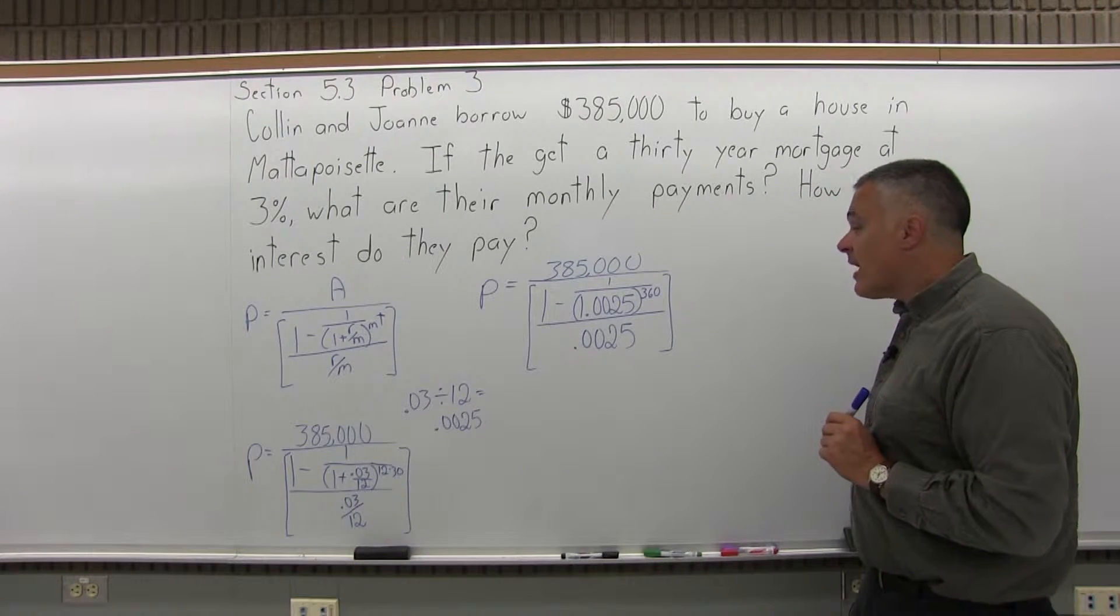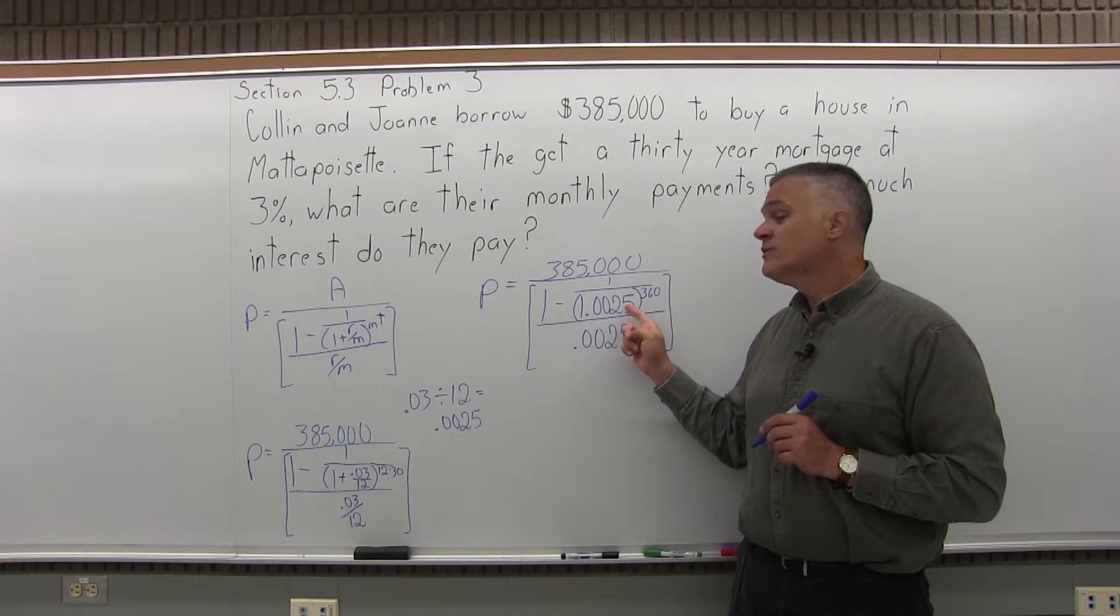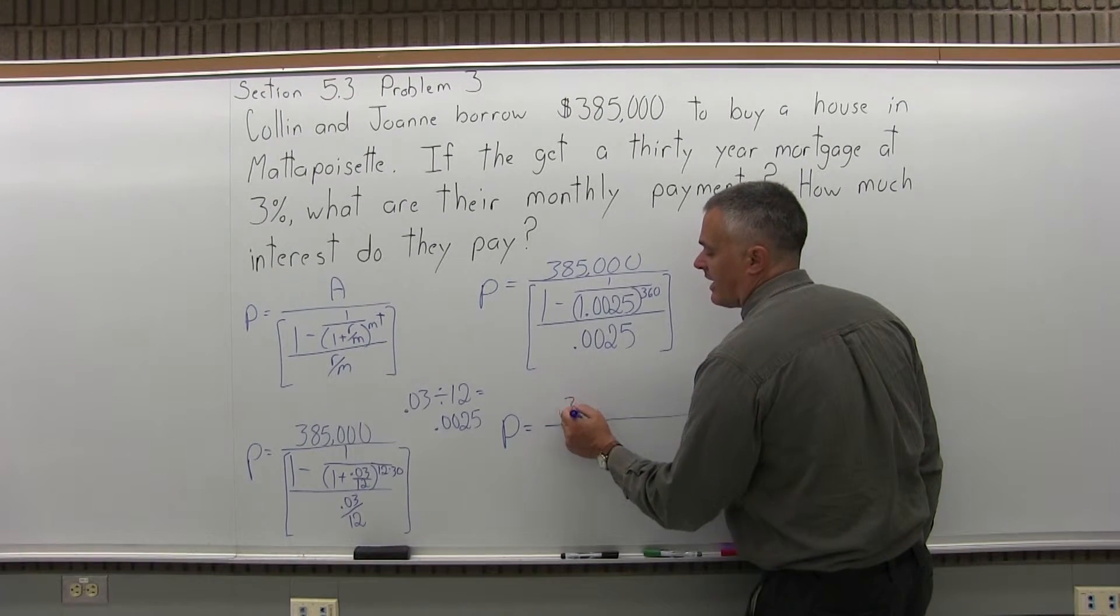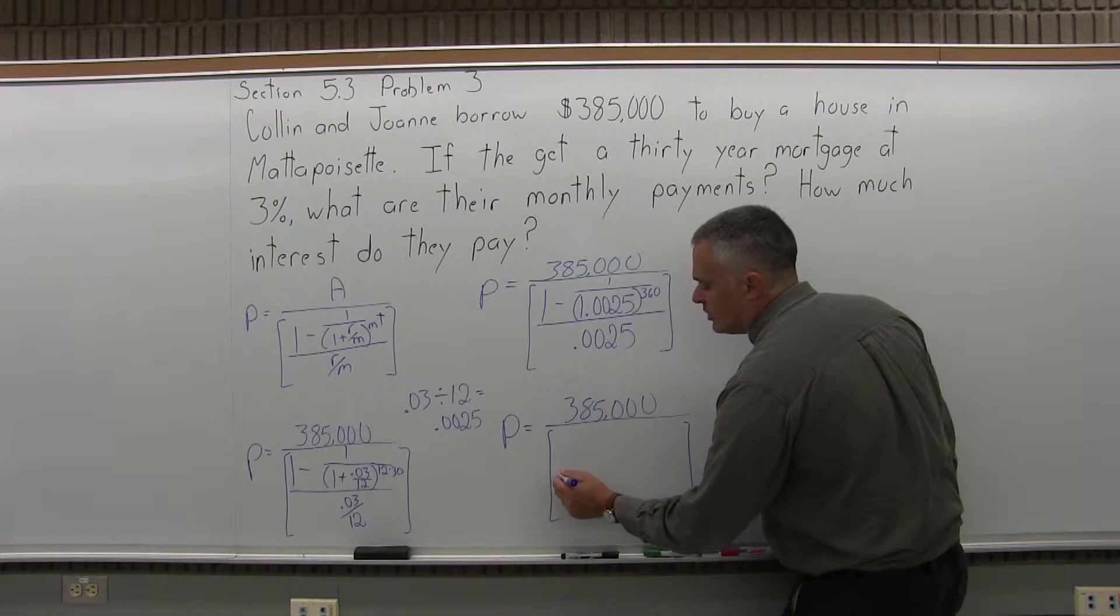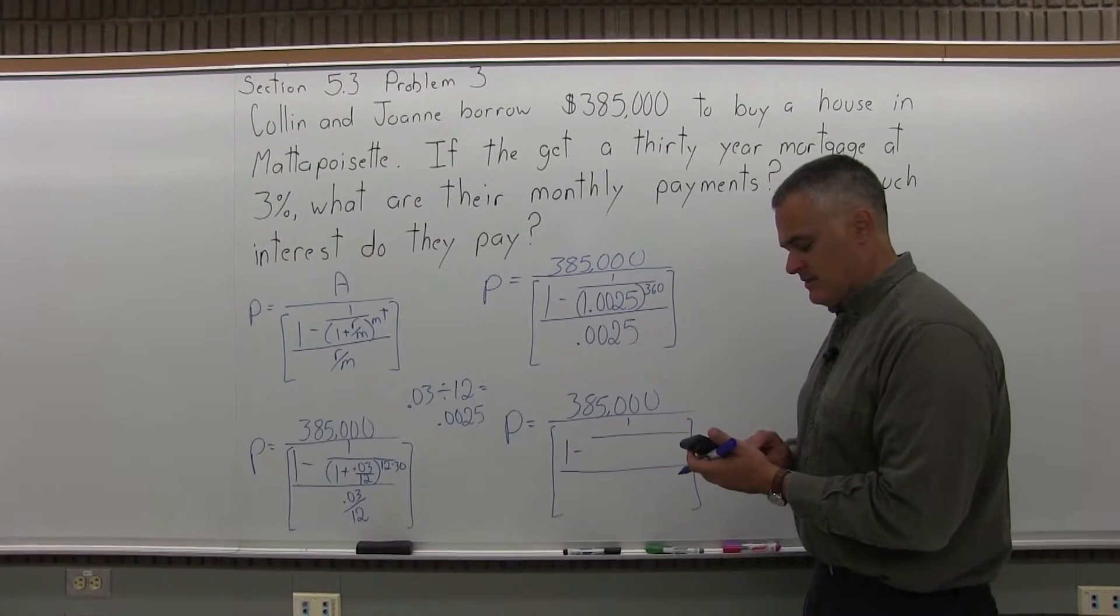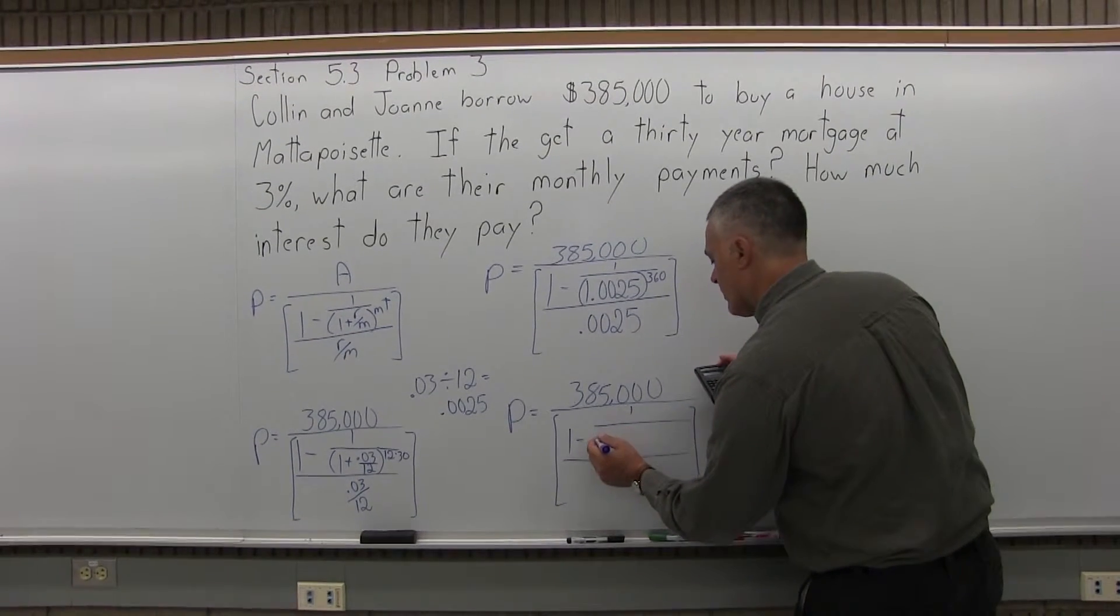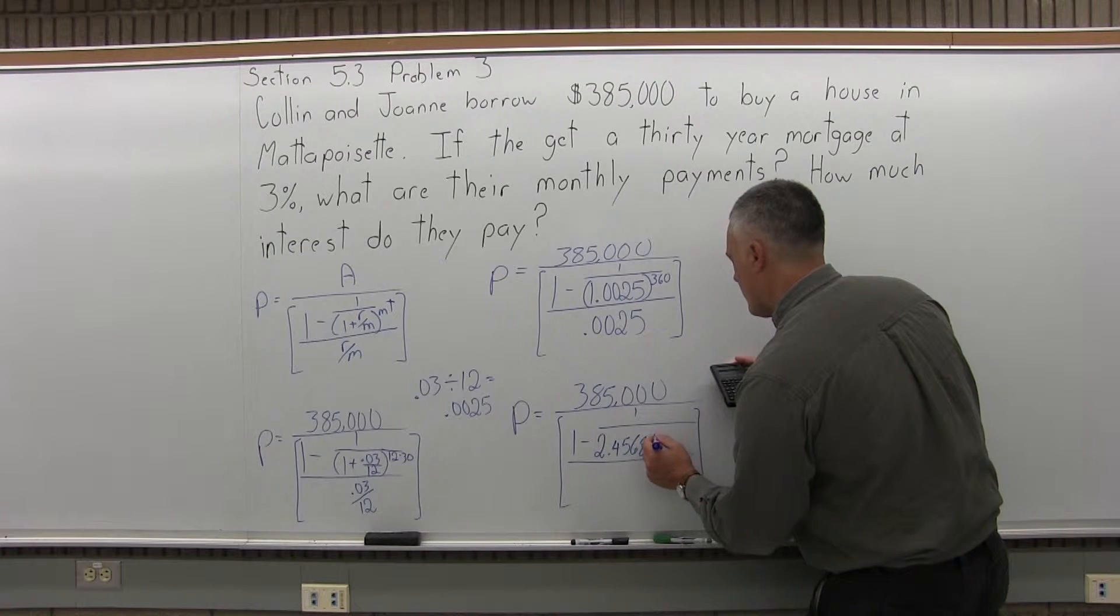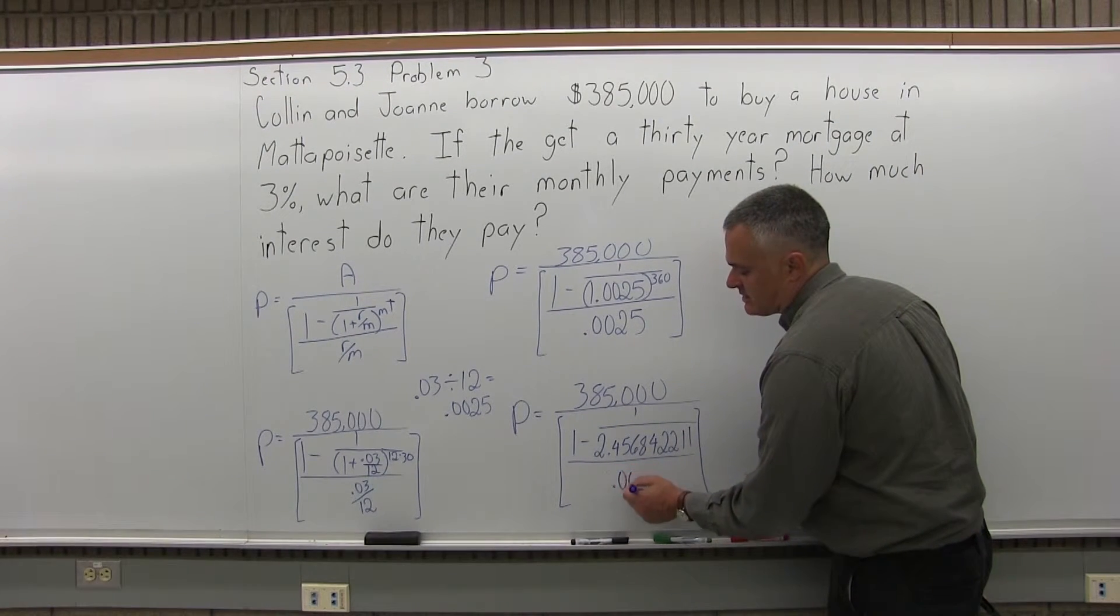And that gets it started. So the next part of this formula that I have to simplify is the 1.0025 to the 360th power. When I do, I'm going to have 385,000 on the very top of the formula. Underneath that there will be some brackets. In the numerator of the brackets, I'll have 1 minus 1 over 2.456842211. Then in the denominator of the brackets, I still have .0025.